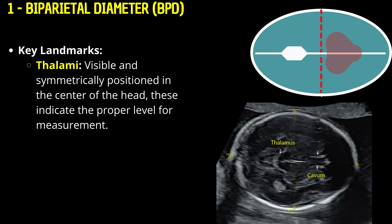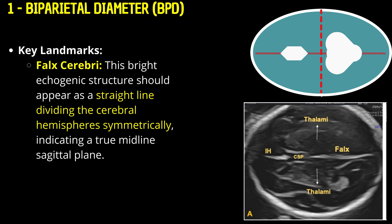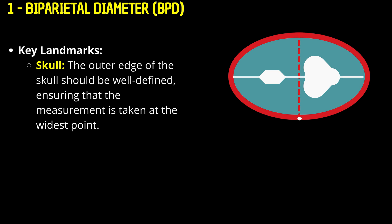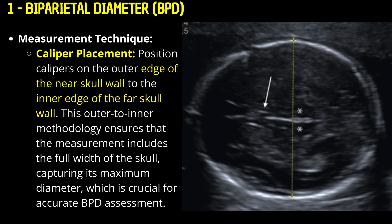Key landmarks for BPD: The thalami should be visible and symmetrically positioned in the center of the head, indicating the proper level for measurement. The cavum septi pellucidae is a small fluid space between the frontal horns of the lateral ventricles and must be clear and centered. The falx cerebrae should appear as a straight echogenic line dividing the cerebral hemispheres symmetrically, indicating a true midline sagittal plane. The outer edge of the skull should be well defined, ensuring measurement is taken at the widest point. For caliper placement, position calipers from the outer edge of the near skull wall to the inner edge of the far skull wall. This outer-to-inner methodology captures the maximum diameter, crucial for accurate BPD assessment.